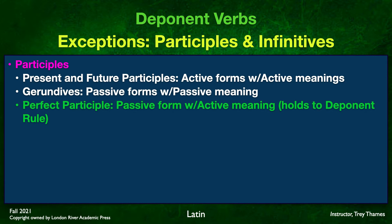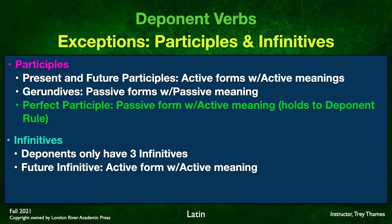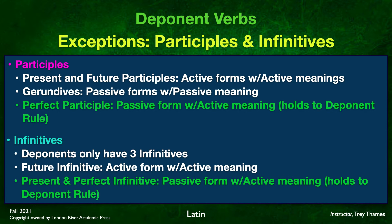The other three participles require you to remember these rules: active form and active meaning for present and future; passive form and passive meaning for the gerundive or future passive participle. Now, what about infinitives? Keep in mind there are only three infinitives in deponents — we don't have six. The one place that breaks the rules is the future infinitive: it is active form with active meaning. The other two infinitives — present and perfect — will be in the passive form but with active meaning, holding true to the deponent rule.